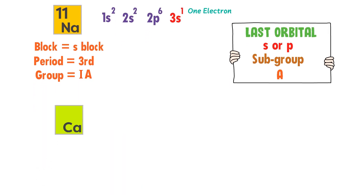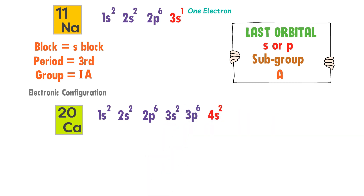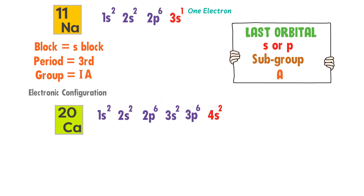Secondly, consider calcium — its atomic number is 20. The electronic configuration of calcium is 1s2, 2s2, 2p6, 3s2, 3p6 and 4s2. If I add all these electrons, I get 20 electrons. Hence I have successfully configured the electrons of calcium. Here the last orbital is S, so calcium is an S block element.